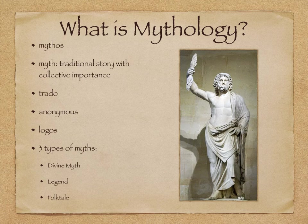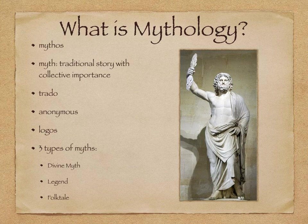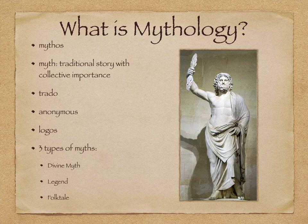Myths are also anonymous and never have an identified author. When we look at Homer's The Iliad, we could argue it's a myth, but we know the author — yet Homer was not the one who created the original story. The story of The Iliad following the Trojan War had been passed down through generations. Homer was the first to put it into written form, which is why he is attributed with it. Interestingly, we don't even really know who Homer was — many scholars think Homer was actually a collection of different individuals whose stories were eventually put together. Again, this is a traditional story with collective importance shared from generation to generation.